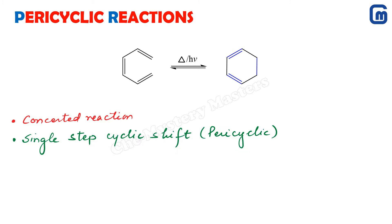The second important feature is that there is a single-step cyclic shifting of electrons. The electrons present move in a cyclic system, always in the same direction — whether clockwise or anti-clockwise. All the bonds will break either clockwise or all anti-clockwise; the direction is always consistent.